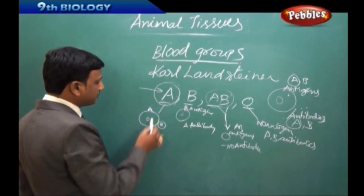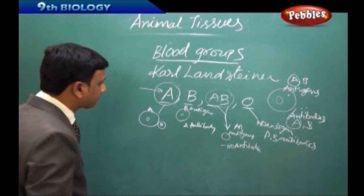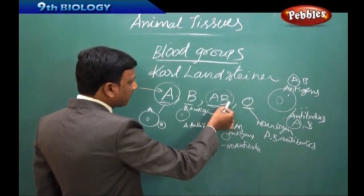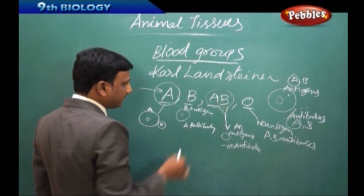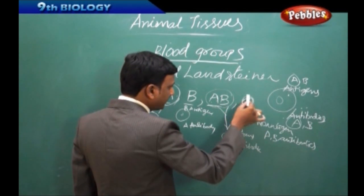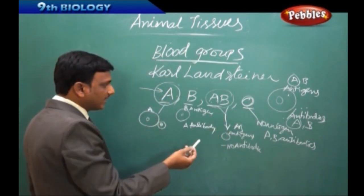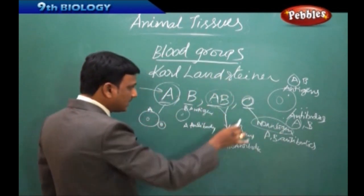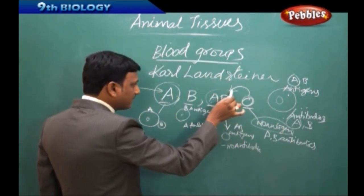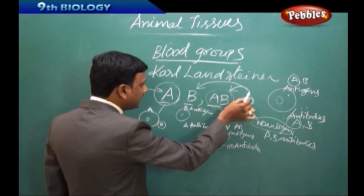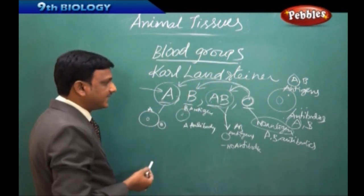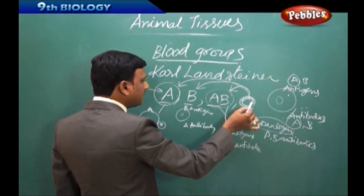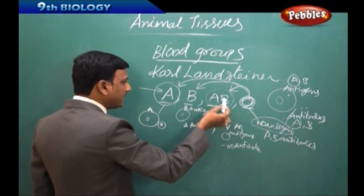So, a group A person should be given group A blood; group B should receive group B blood; AB should receive AB blood; and O group should receive O group blood. However, because O group has no antigens, O group blood can be given to AB, B, and A group persons.